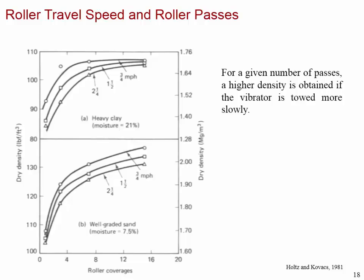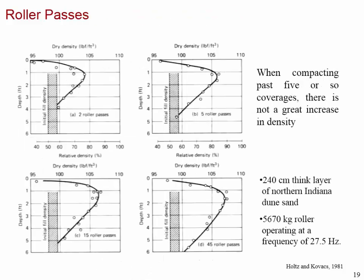For a given number of passes, higher dry density is obtained if the roller moves more slowly. Looking at towing speed — three-quarter mile per hour, one-and-a-half mile per hour, and two-and-a-quarter mile per hour — you can see that as towing speed decreases, dry density increases for the same number of passes. So towing slowly gives you a higher dry density.